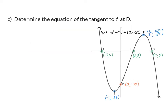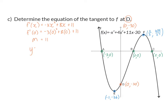Question C: determine the equation of the tangent to F at D. There are always three steps: first, determine the point of contact, which is D at (0, -30), the y-intercept. Next, determine the gradient using the derivative — substitute the x-value of zero, giving a gradient of 11, so the equation is y = 11x + c. The third step is to determine the y-intercept, which is -30, since the point of contact is on the y-axis.